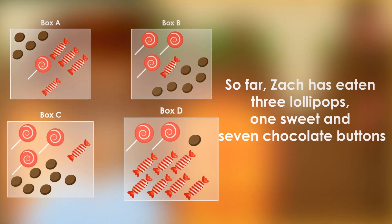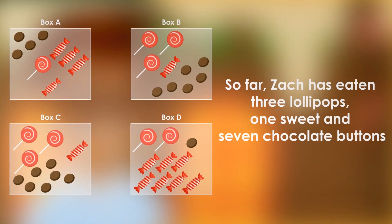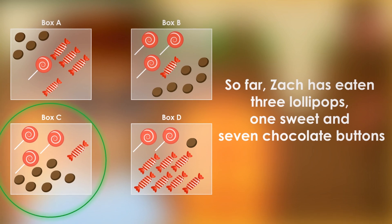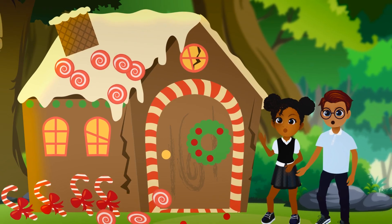Which box represents what Zach has eaten? Box C represents all of the treats Zach has eaten.